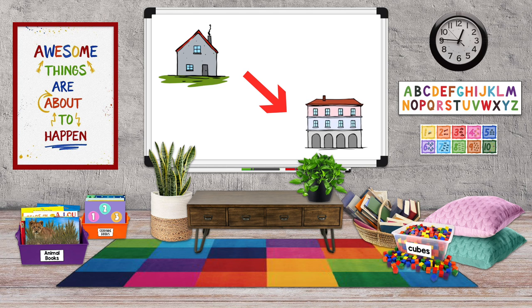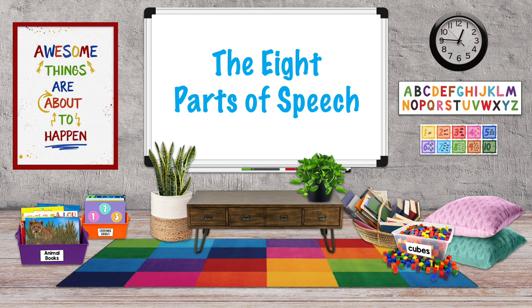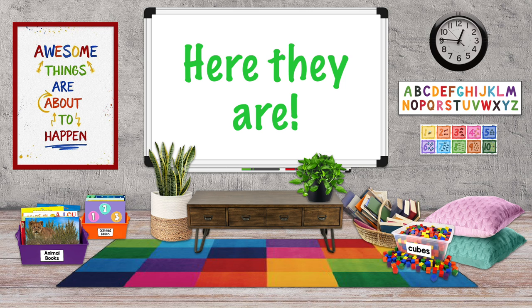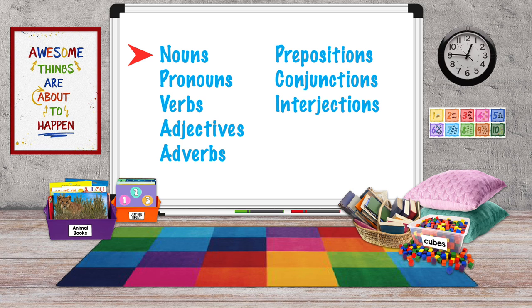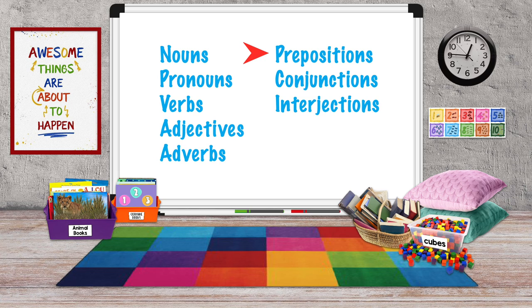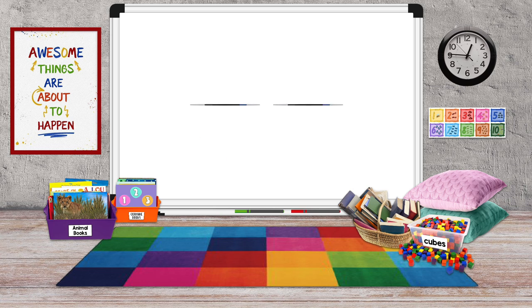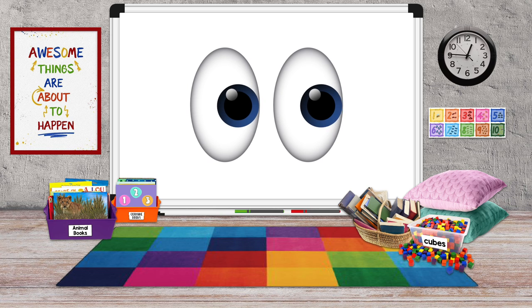Now that we have that out of the way, we can take a look at the eight parts of speech in English. Here they are: nouns, pronouns, verbs, adjectives, adverbs, prepositions, conjunctions, and interjections. Let's look at each one briefly.